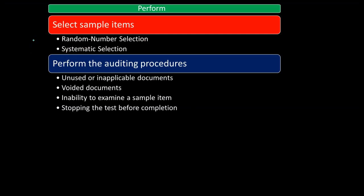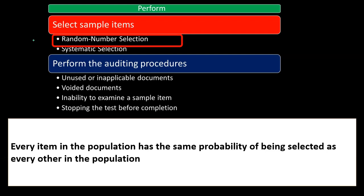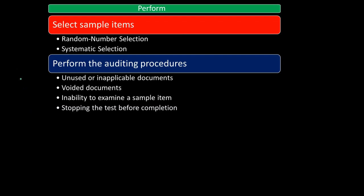When selecting sample items, we can use either random number selection or systematic selection. Starting with random number selection — the most common type — every item in the population has the same probability of being selected as every other item. This requires some kind of random number generator, because simply trying to pick something randomly ourselves doesn't usually produce a truly random selection. That's the classical default method when thinking about any kind of statistical sampling.